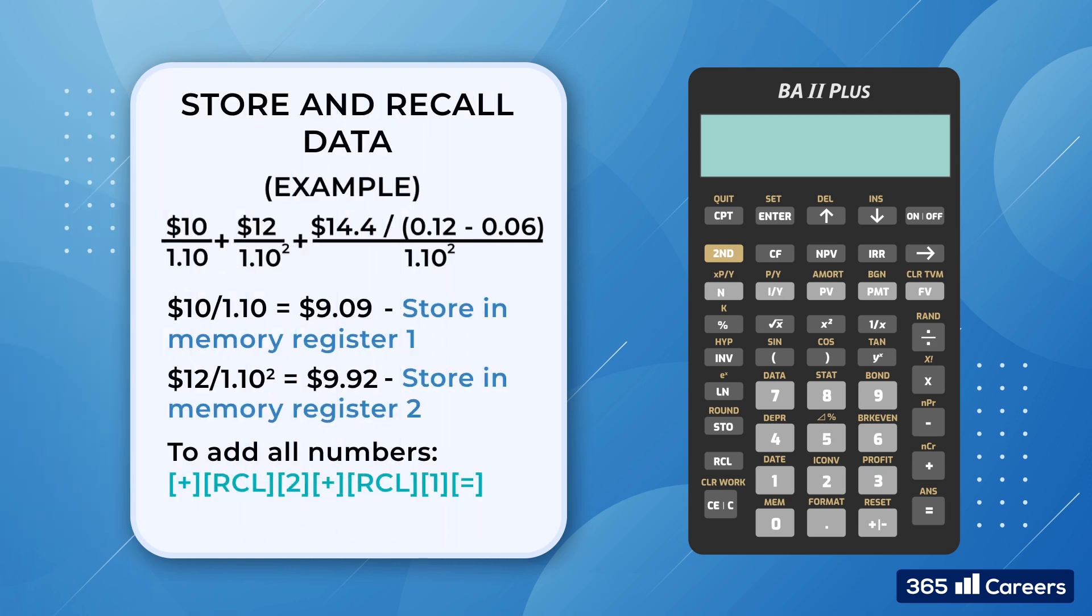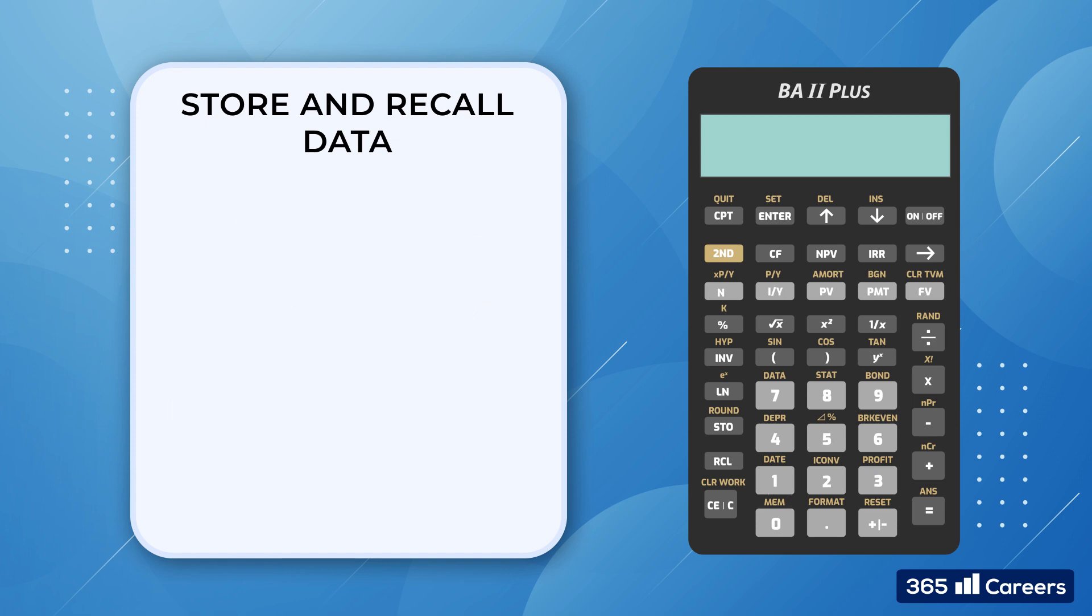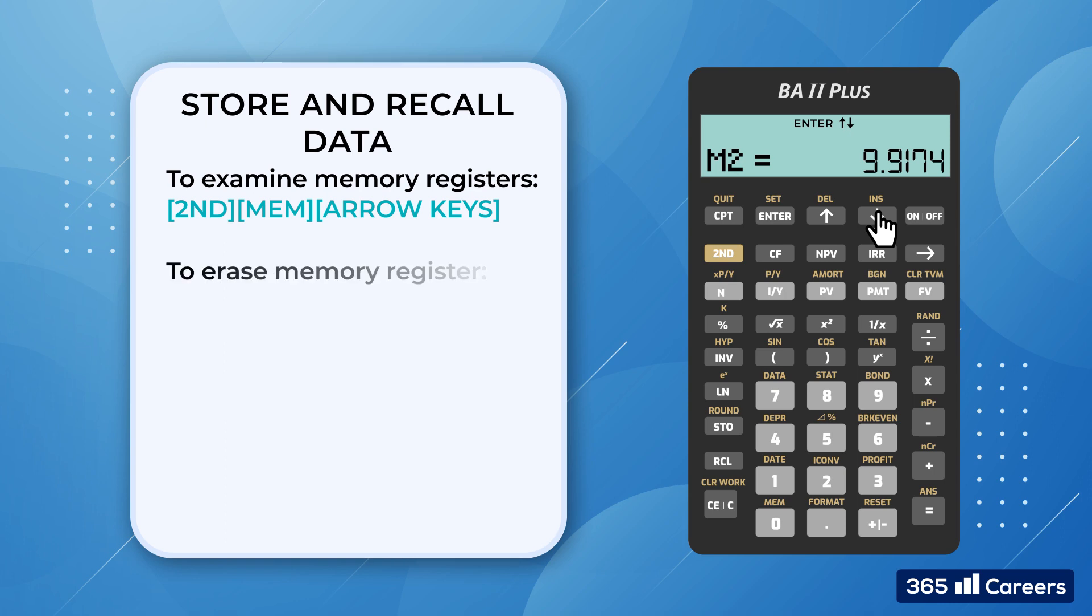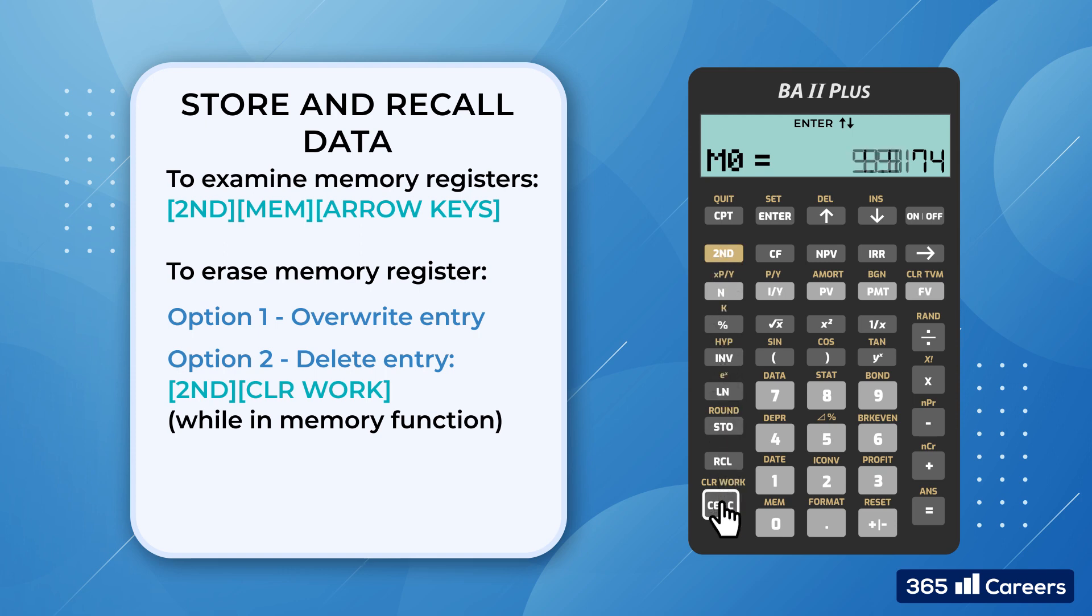When you work with the calculator's memory function, it is always useful to examine what values are stored in it. To do this, you press second, followed by zero. Then you could scroll down and check the entries. If you don't need these entries anymore, you have two options to erase them. The first one is to overwrite the memory registers, and the second one is to delete these entries by pressing second, clear work.